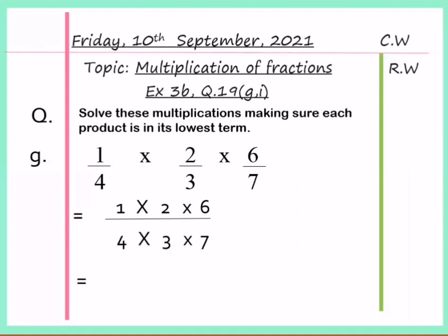Then, we will multiply 1 into 2, 2 into 6, which is 12. And we will get 84 as denominator.